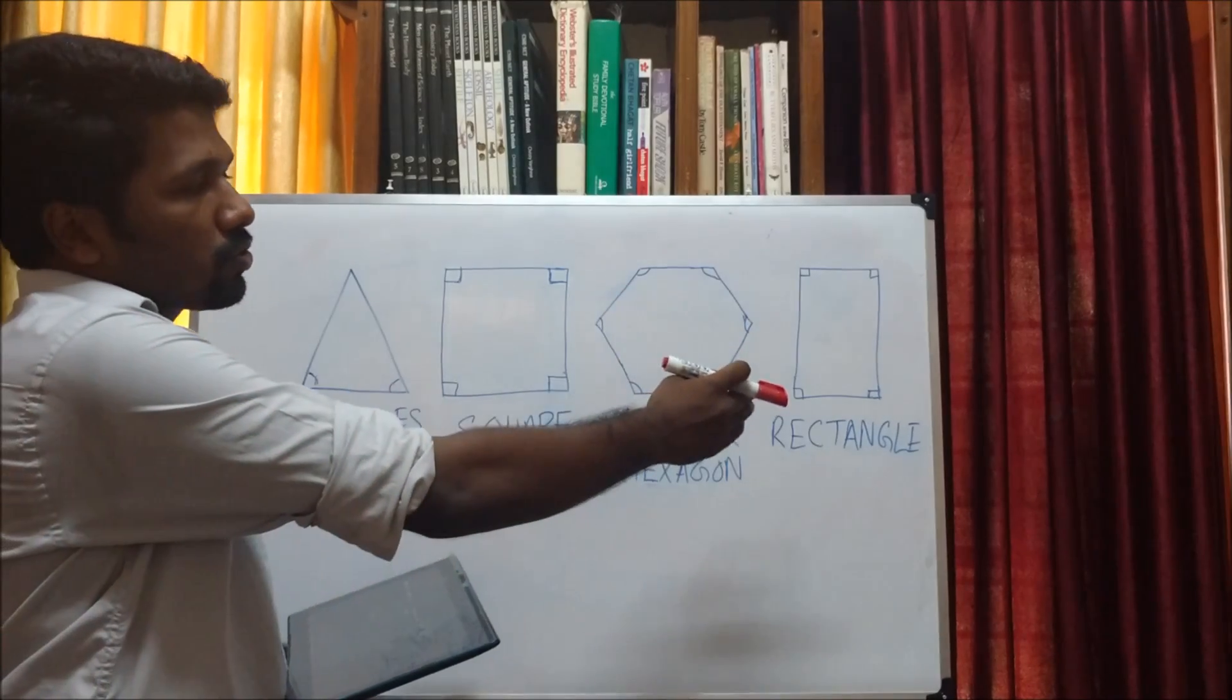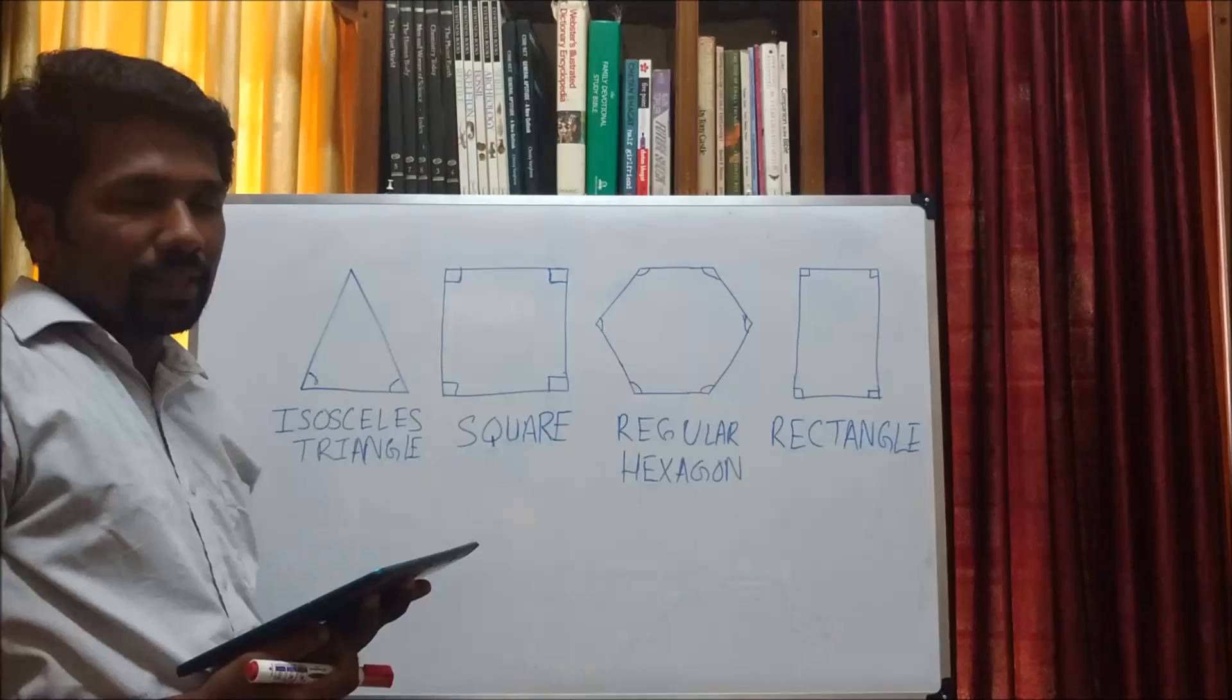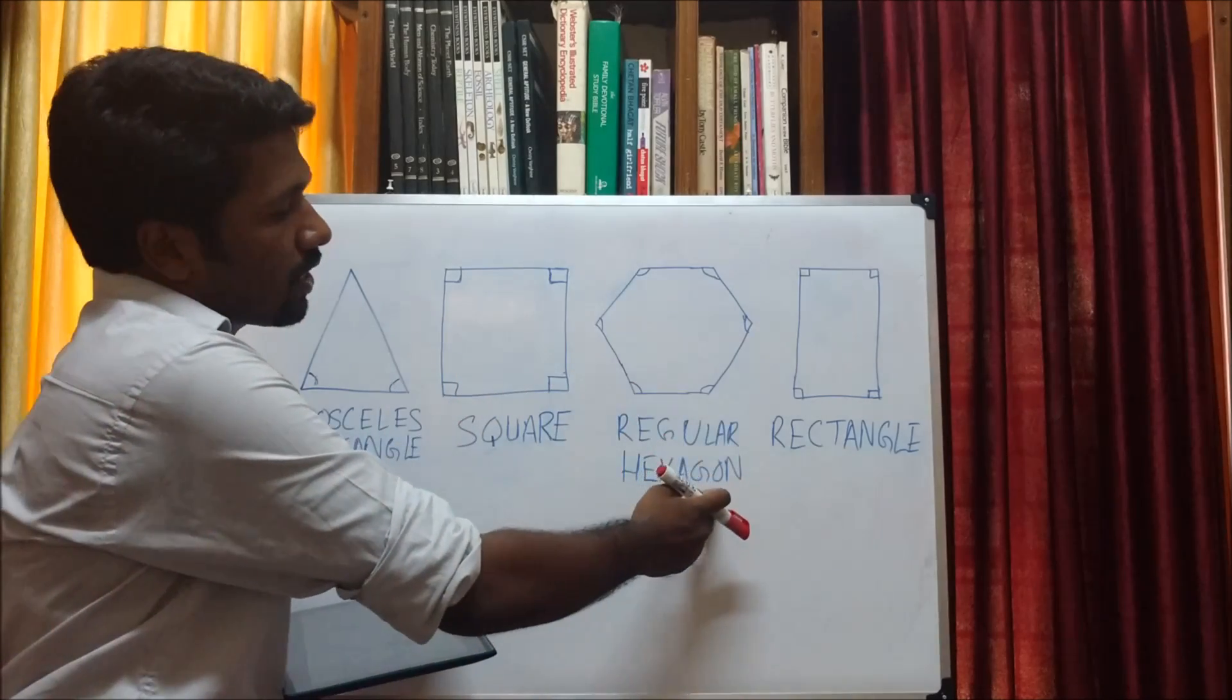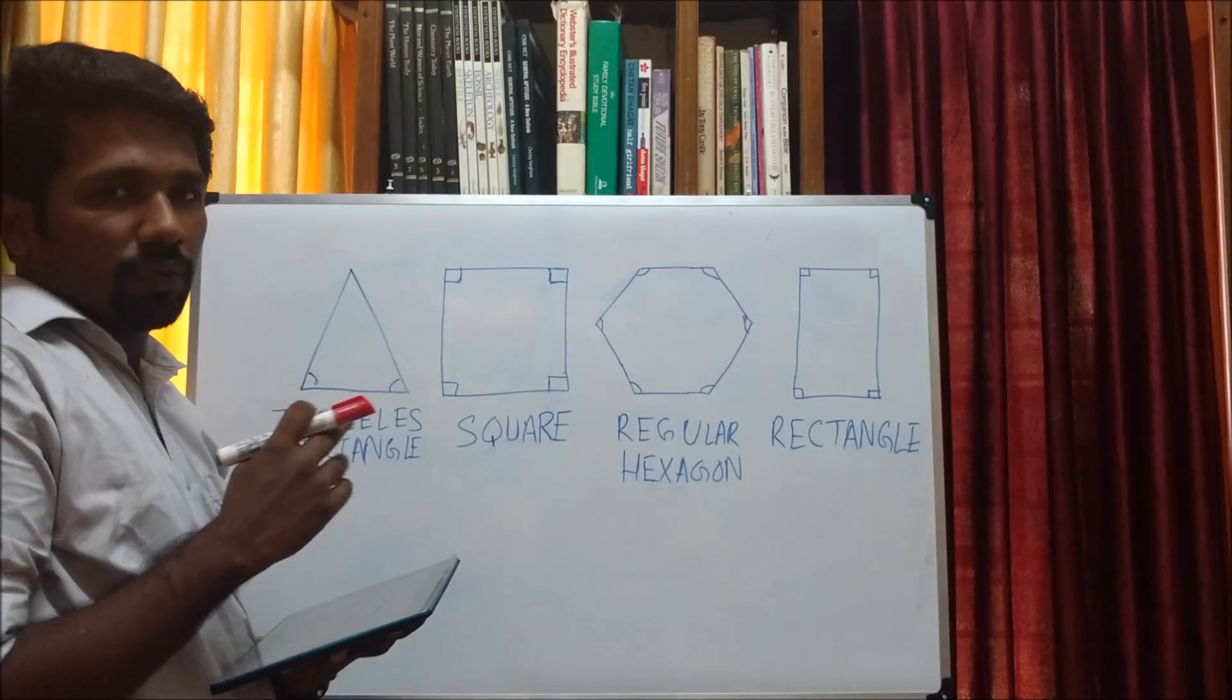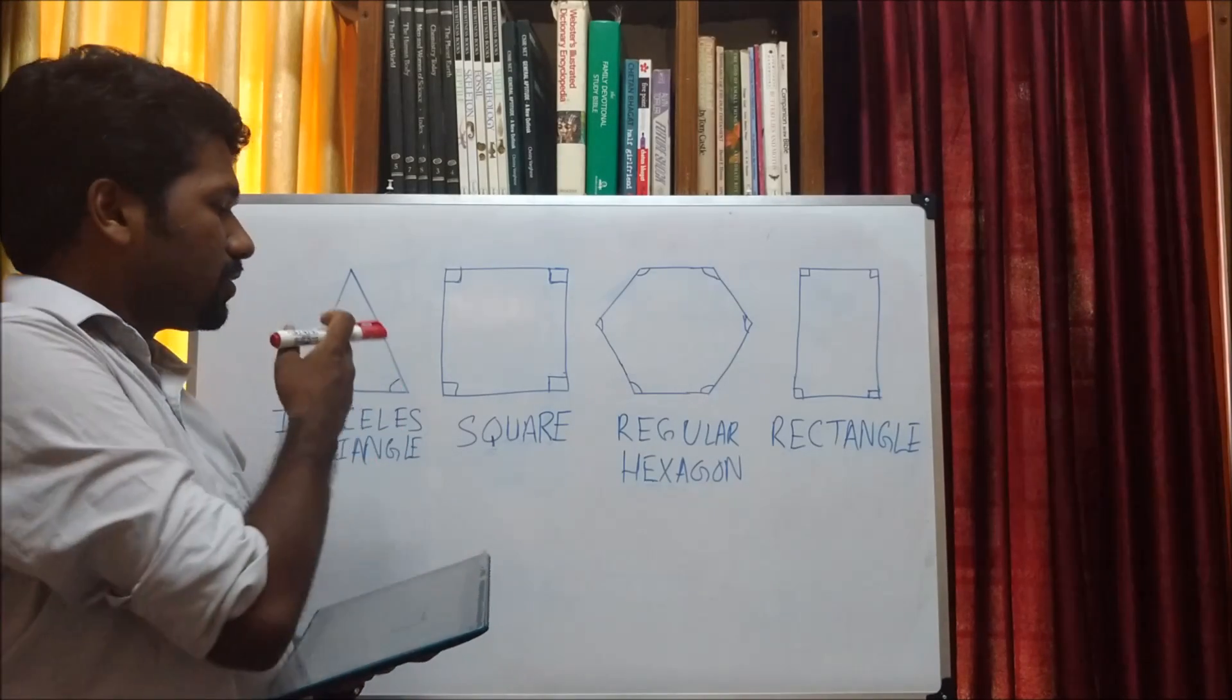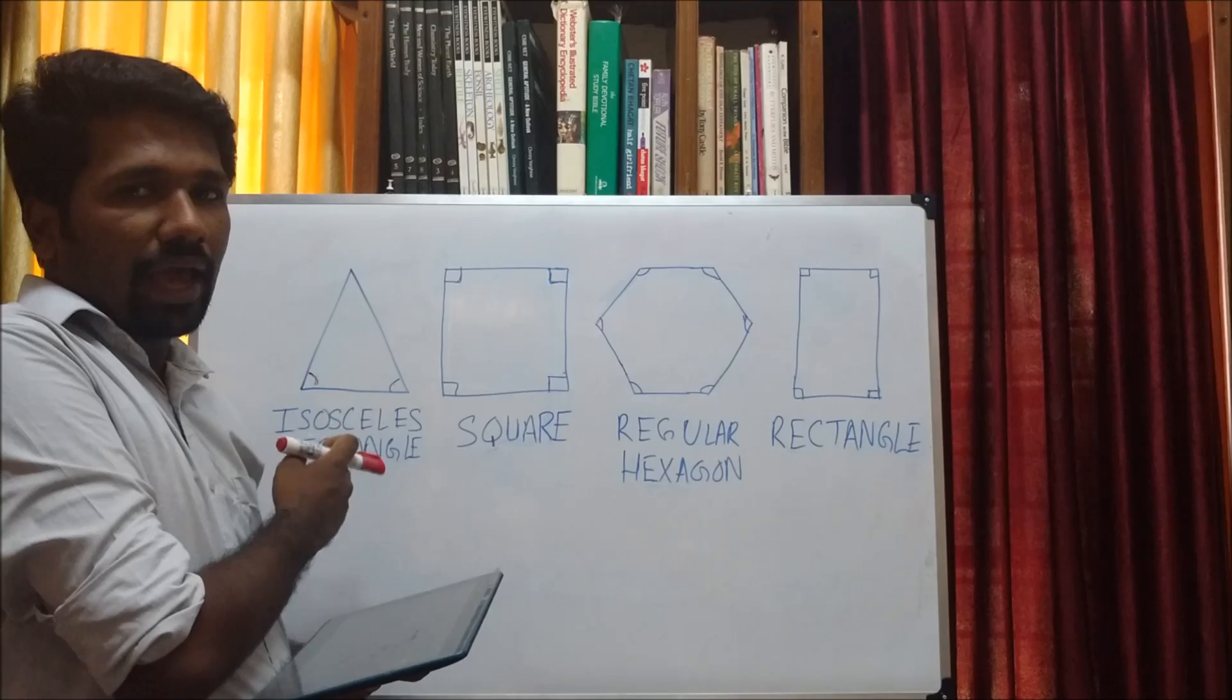For a rectangle also, all four angles are equal. That means the square, regular hexagon, and rectangle have all of their interior angles equal. Thus, the isosceles triangle is the odd one out, and hence the answer.